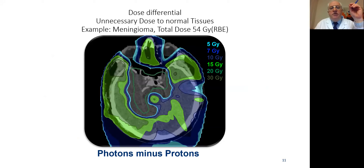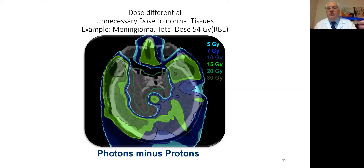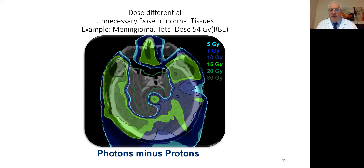Here is a patient treated for meningioma with 54 gray, and you see this dose differential. We subtract the proton plan from the photon plan, and then you have the differential — showing 5, 7, 10, 15, 20, and 30 gray of dose sparing. The dose sparing is very significant in this plan. It is not just the low dose bath; it actually also goes into the area of 15 to 20 gray and above, which are levels of definite clinical relevance, certainly the younger the patient.